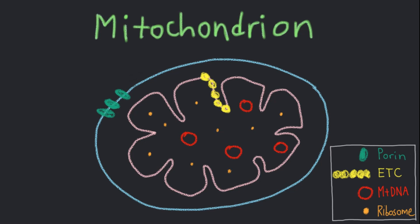Mitochondria are tiny organelles inside the cell that generate energy in the form of ATP. This is why mitochondria are called the powerhouse of the cell.